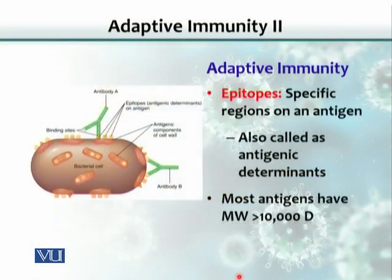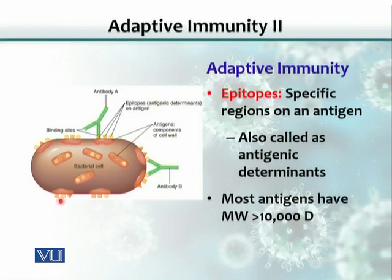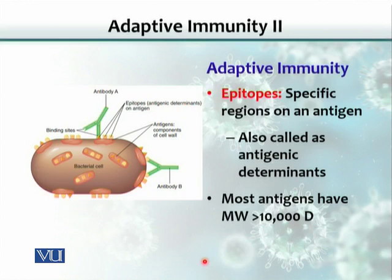Now, the word epitope has to be defined. As you can see here, this is a bacterium. As a whole, we would call this an antigen. But when we analyze the antigen closely, you can see small structures shown on the surface of this bacterium — a rectangle or square, a semicircle, and a triangle. Basically, these shapes represent various parts of the antigen, and each of them is called an epitope or antigenic determinant.